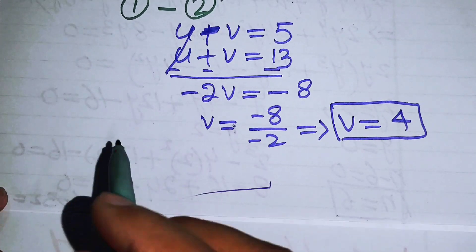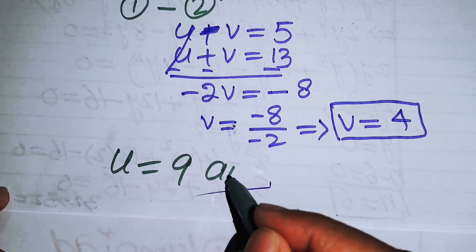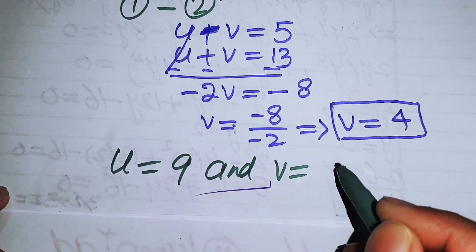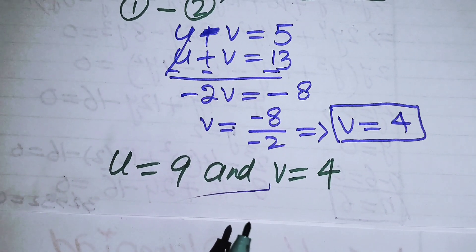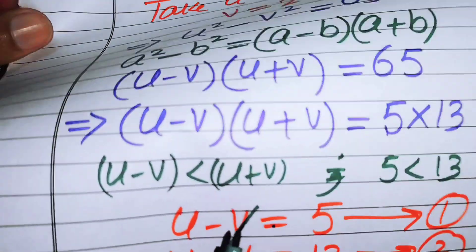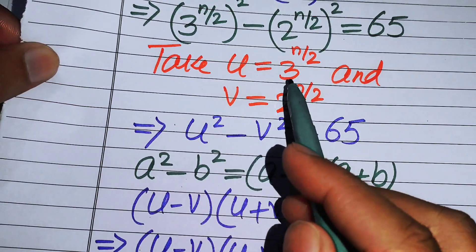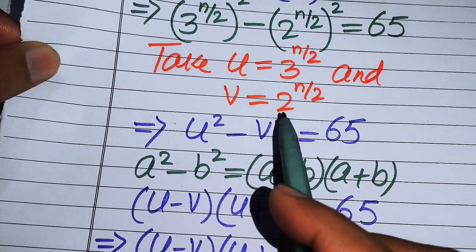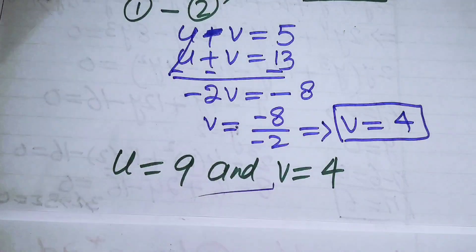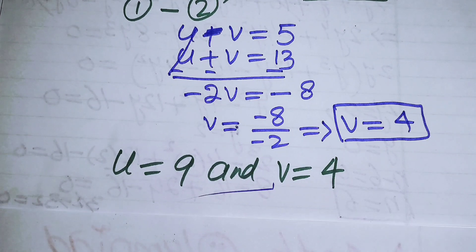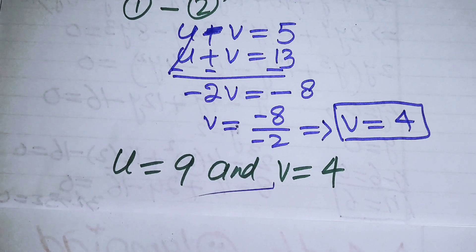We now have u equals 9 and v equals 4. We will back-substitute using the original definitions: u equals 3 to the power of n over 2, and v equals 2 to the power of n over 2.